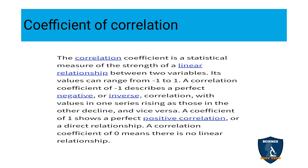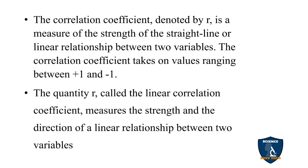If r is minus 1, it indicates perfect negative correlation. If r value is 0, it indicates no correlation. If r value is plus 1, it indicates perfect positive correlation. The correlation coefficient r measures both the strength of the linear relationship and its direction — whether it is moving in a positive direction or a negative direction.